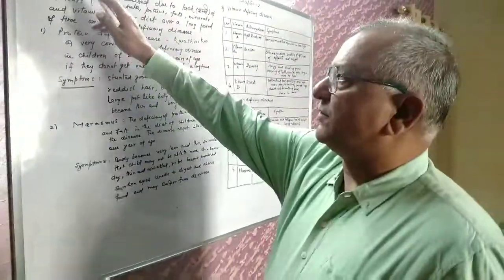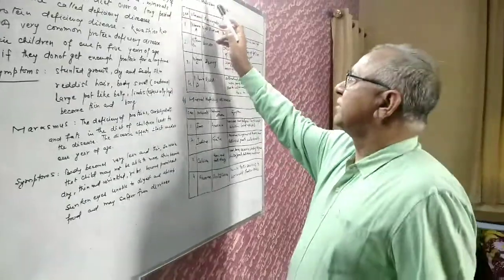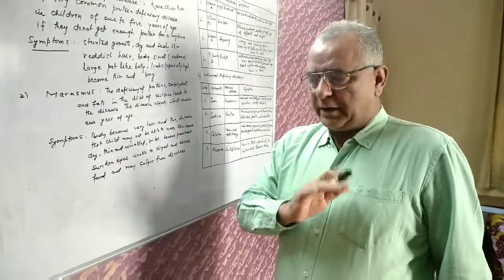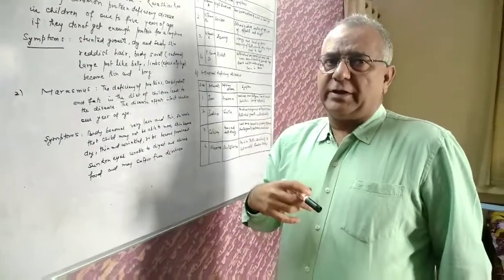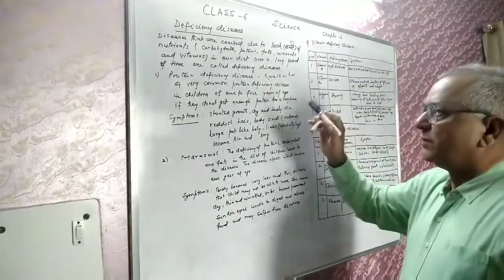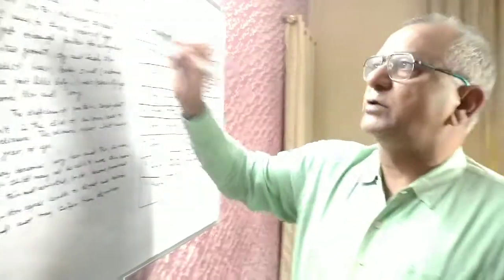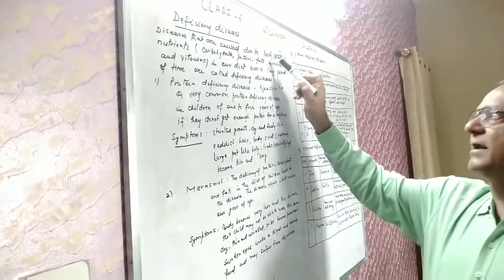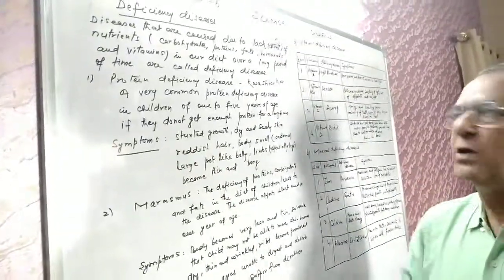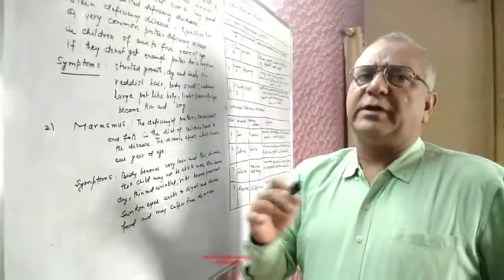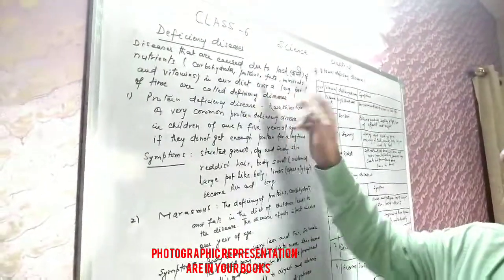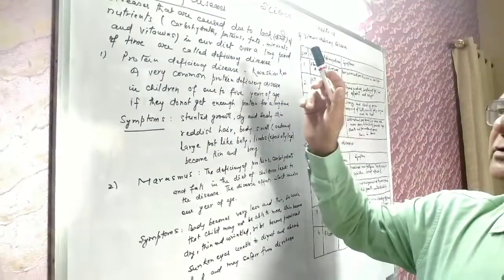Okay students, in the first two lectures we discussed different components of food and balanced diet - how much of each type and what exact amounts are required for our body. Now in this third lecture we will consider deficiency diseases. Diseases that are caused due to lack of nutrients - carbohydrates, proteins, fats, minerals and vitamins in our diet over a long period of time. If there's deficiency for a long time, then there are certain diseases called deficiency diseases.